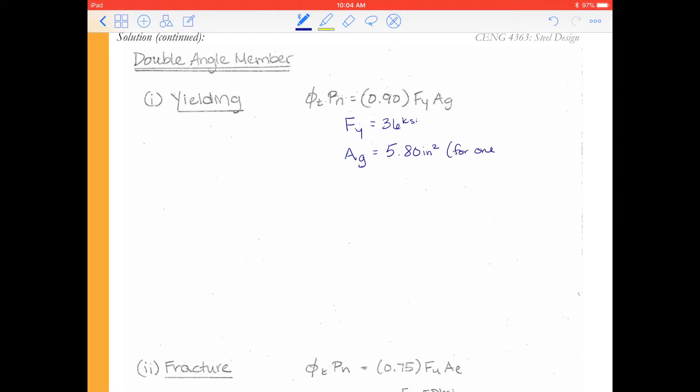For one angle member, the gross area is 5.80 inches squared. And we'll just make a note that that's for one angle. And we have an angle 8 by 4 by 1/2. Alright, and we can find this in AISC table 1-7.